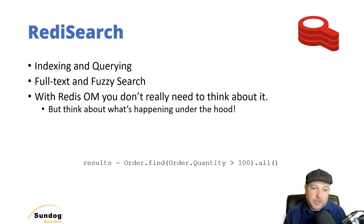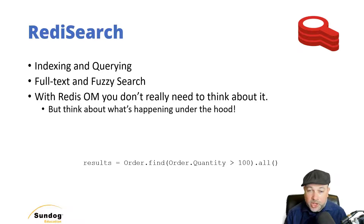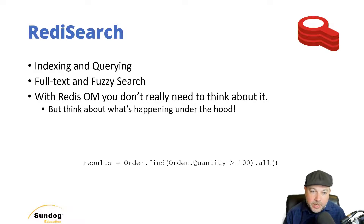With Redis OM, you don't really need to think about it — that's the beauty of Redis OM. It abstracts away all the complexity of what's going on under the hood. I can say something like results equals order.find(order.quantity > 100), and Redis OM will figure out how to execute that query — whether it involves Redis Search or not. I could chain queries together, do full-text search, do fuzzy search, and it would still work. Redis OM makes it all happen in a very Pythonic way, writing very natural-looking lines of code that do exactly what they sound like.